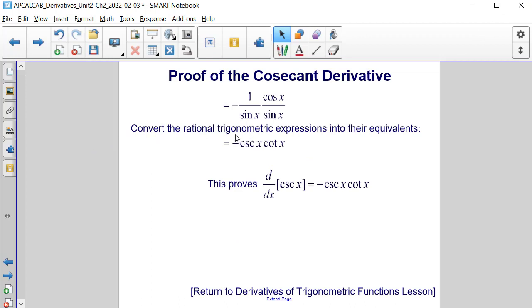The last step is to convert the rational trigonometric expressions into their equivalents. Negative 1 divided by sine of x is equal to negative cosecant x, and cosine x divided by sine of x is equal to cotangent x.